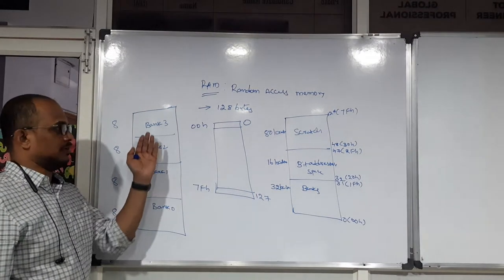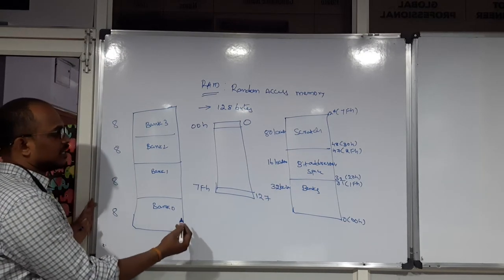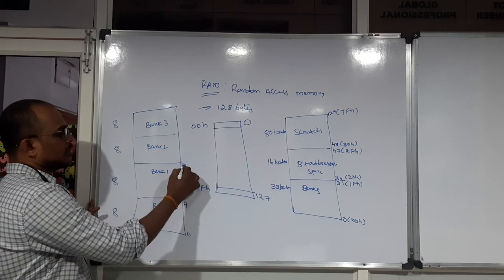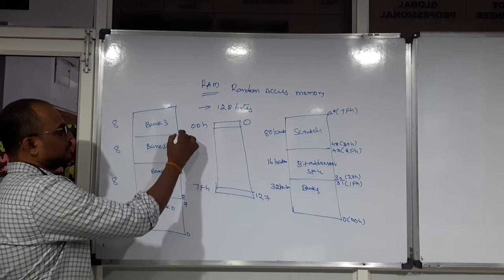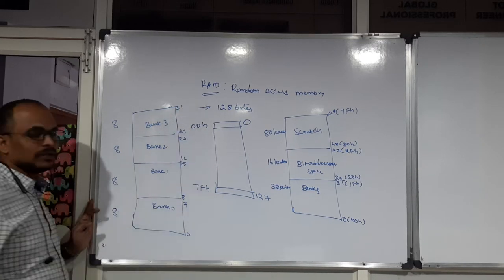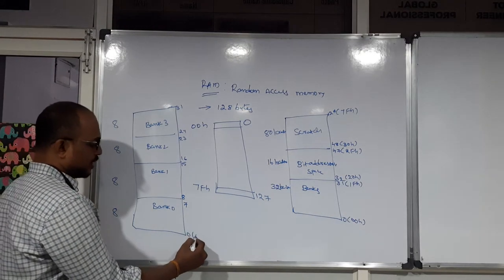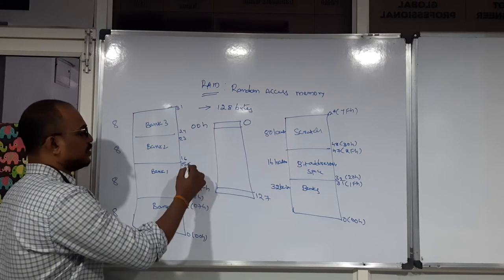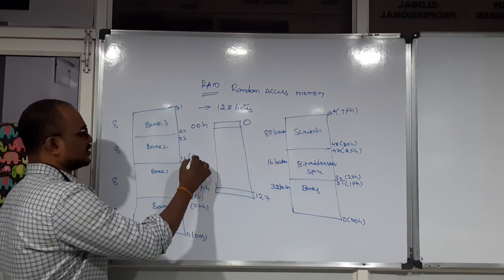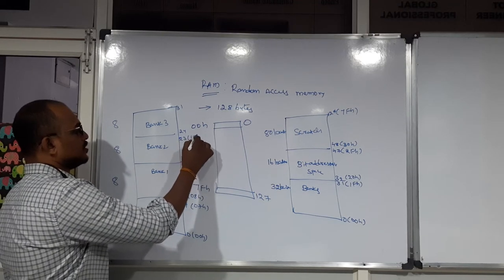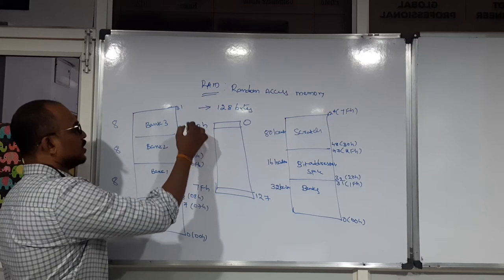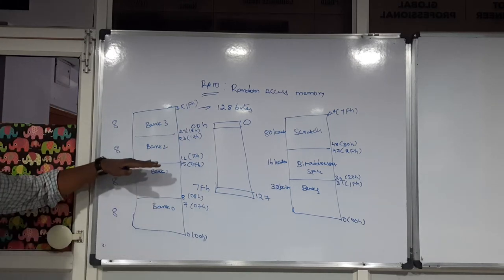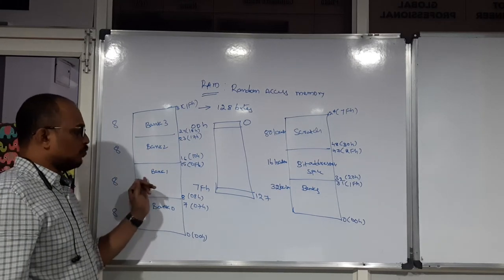In hexadecimal, Bank 0 spans 00H to 07H, Bank 1 spans 08H to 0FH, Bank 2 spans 10H to 17H, and Bank 3 spans 18H to 1FH. There are totally four banks — Bank 0, Bank 1, Bank 2, and Bank 3.